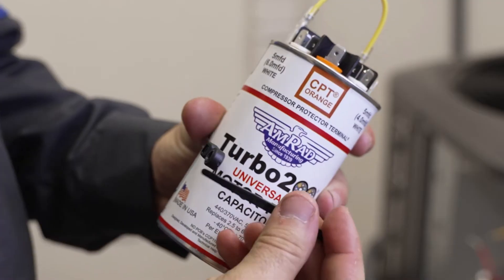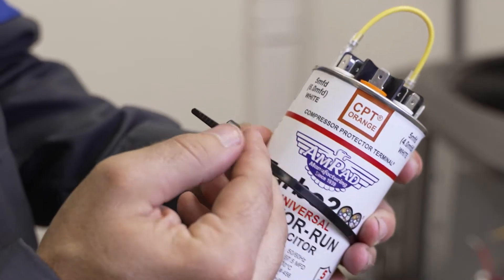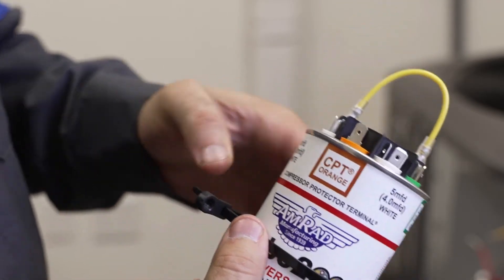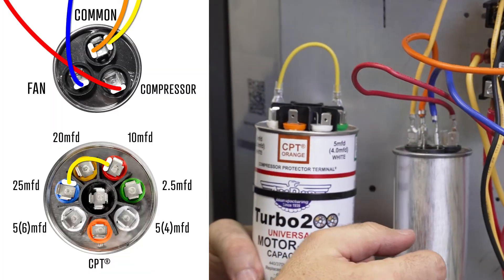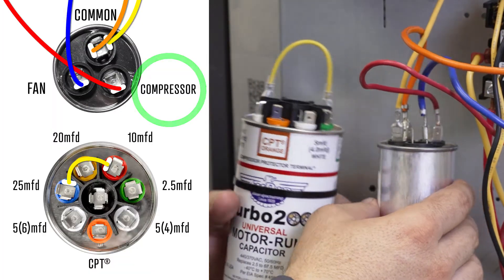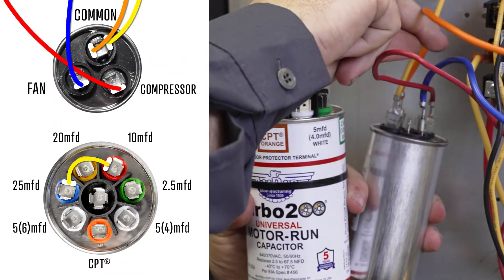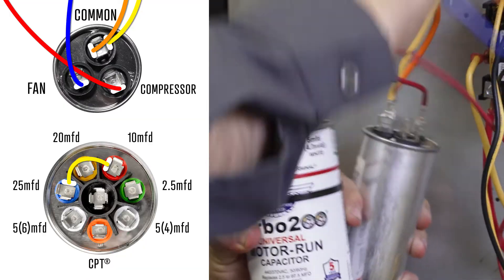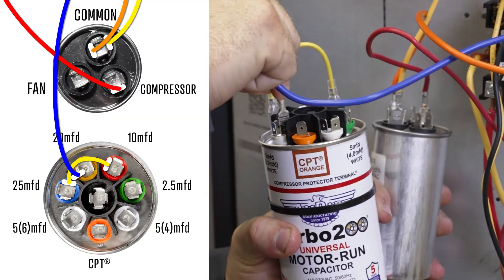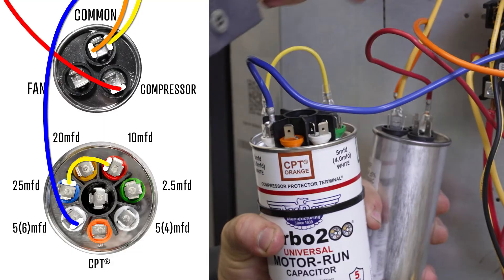Our turbo is now ready to install with the included strap and screw or with an existing clamp or screw in the unit. Identify the common compressor and fan terminals on the capacitor you're replacing. Take the wires from the fan terminal and place them on the 5-6 MFD terminal.